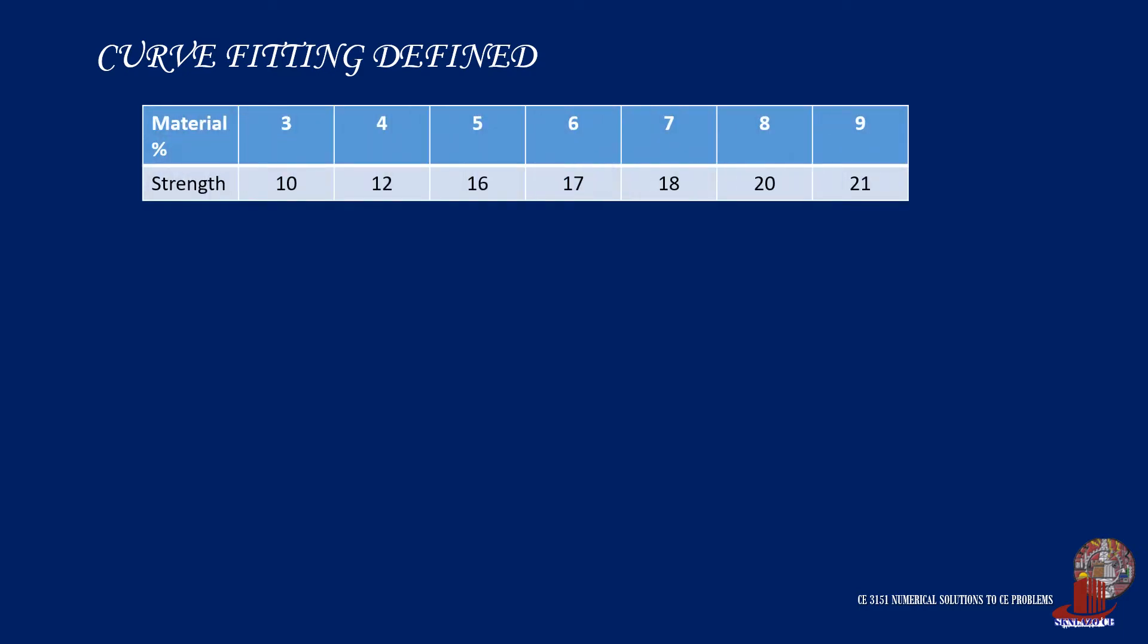In the example of collecting data from the field, say we intend to add a certain material to another conventional structural material such as concrete. The proportions of the new additive will be taken as independent variables as they can stand alone. The strength of the concrete in this example will be totally dependent on the proportion of materials added, thus called dependent variables.